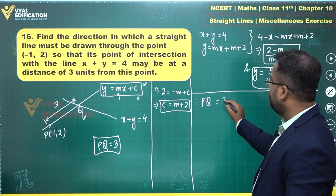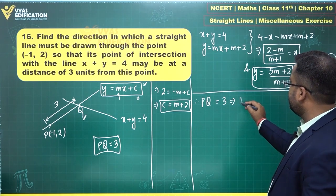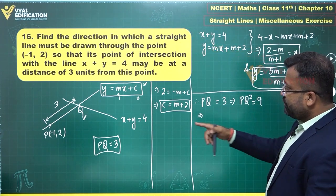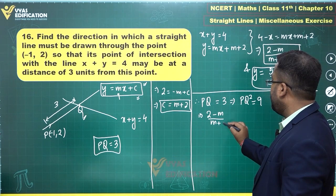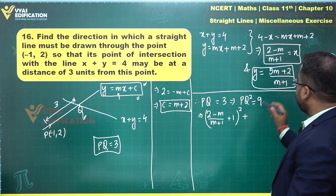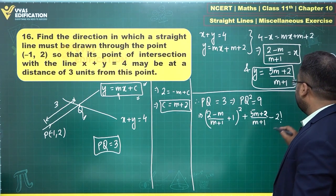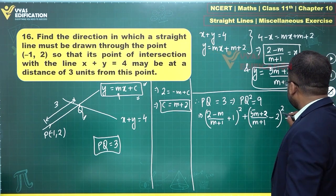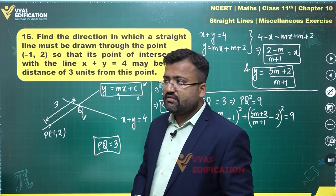Now using PQ = 3, we set PQ² = 9. Substituting: x₂ - x₁ = (2 - m)/(m + 1) - (-1) = (2 - m + m + 1)/(m + 1), and y₂ - y₁ = (5m + 2)/(m + 1) - 2. We get a quadratic in m, which suggests two possible answers — two possible positions for Q at distance 3 from P.